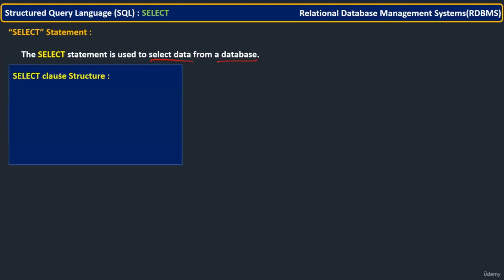A very important thing we must know is the SELECT clause structure — how the SELECT structure is going to be. This must be very clear and very strict to follow. The first one is SELECT — we are retrieving the data. What columns, what attributes you want to retrieve, that you are going to mention after SELECT. SELECT is a keyword you must write down. After that, what are all the attributes in a table that you want to retrieve — those attributes you are going to mention immediately after the SELECT word. These attributes you are retrieving from one table or more than one table, so those tables you must mention. These are the two things you must have whenever you are writing a SELECT statement.